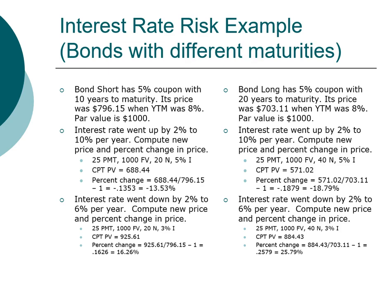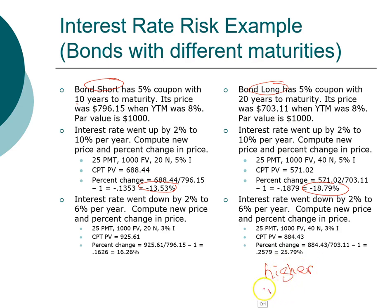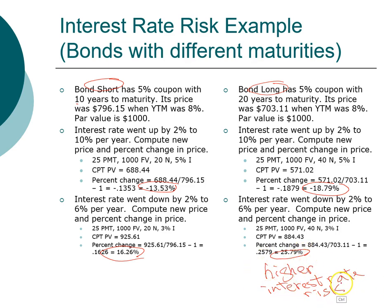What this example demonstrates clearly in numerical terms is that when you have a bond with shorter maturity — 10 years — the percentage price change is smaller. When interest rate went up, the short-term bond went down by 13.5%, compared to the longer-maturity bond which dropped 18.79% for the same 2% rise in interest rate. Likewise when interest rate went down, the longer-term bond's price went up by a much greater percentage. This confirms the theory that bonds with longer maturity carry higher interest rate risk.